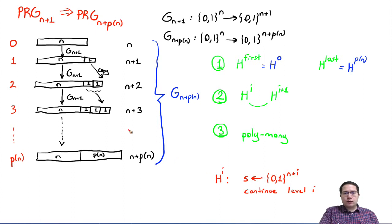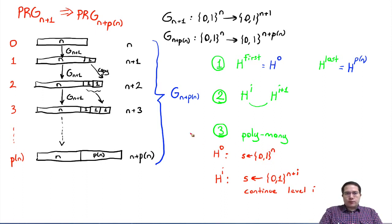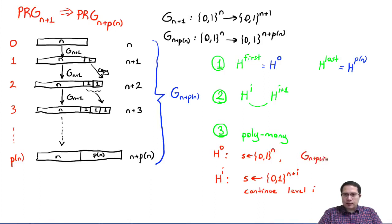Let's see what this means for specific values of i. Consider H_0 — the zeroth hybrid, the first hybrid essentially. It means we pick s that is n bits (since i=0), and then start at level zero. Starting at level zero with n bits of randomness corresponds to running G_{n+p(n)} using s as input. This gives us a pseudorandom output r at the end, and the length of r would be n+p(n) bits.